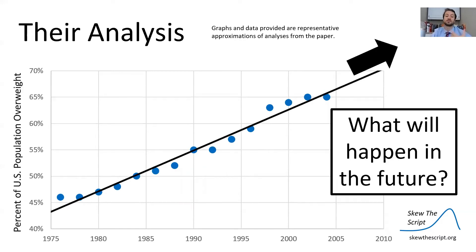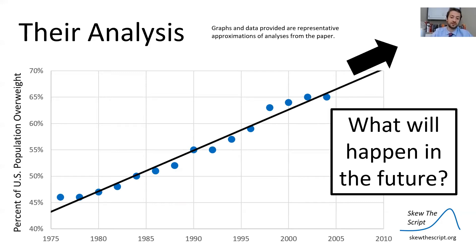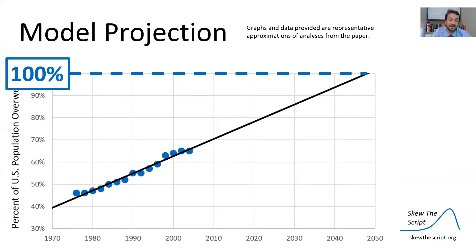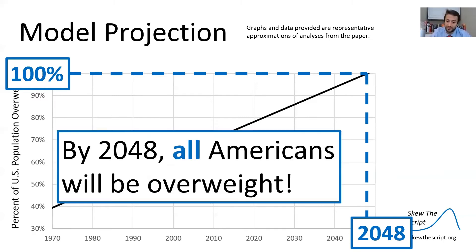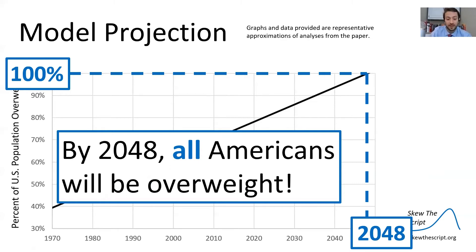Now we want to estimate what is going to happen in the future, because linear models can be useful for making predictions. However, as you can see here, the predictions being used extend the line of best fit — the linear model — beyond our data. In this case, we are looking at when the prevalence of obesity will hit 100%, every individual. And as we saw in the cited article, that is estimated, according to this linear model, to be 2048 on the x-axis — the statement being that by 2048, all Americans, 100%, will be overweight.